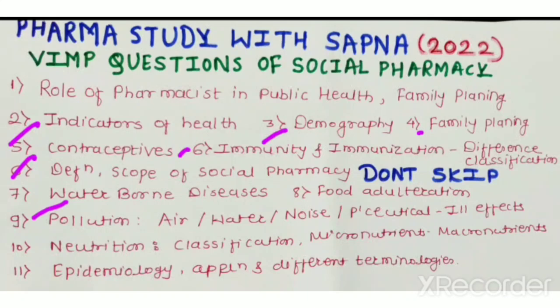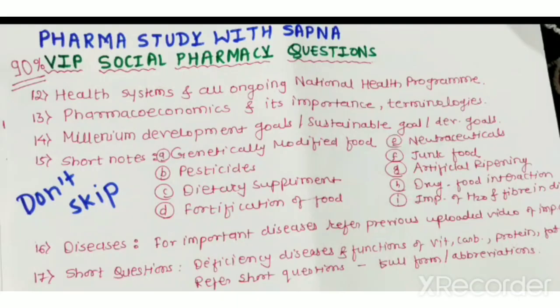Next is waterborne diseases — different types of diseases may be asked. Food adulteration with examples and pollution, including different types such as air, water, noise, and pharmaceutical pollution — prepare all of these along with their ill effects on health. For nutrition, prepare its definition and basic classification with examples of micronutrients and macronutrients and their differences. Epidemiology, its applications, and different terminologies used in epidemiology are also very important.